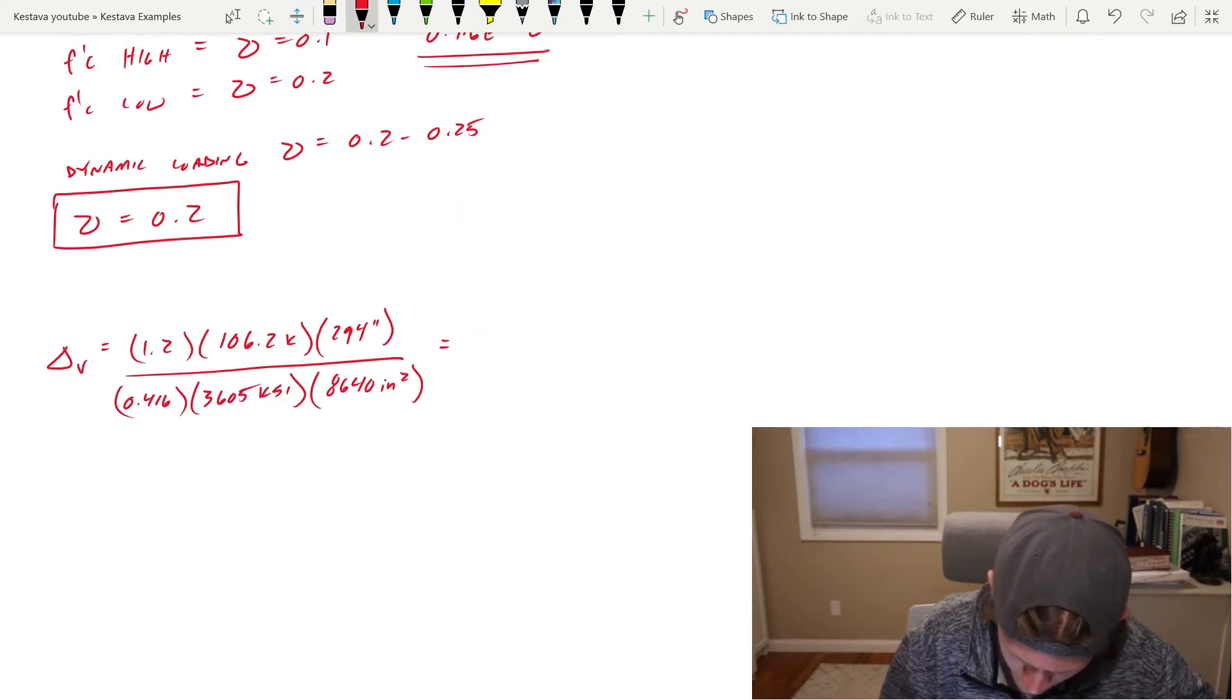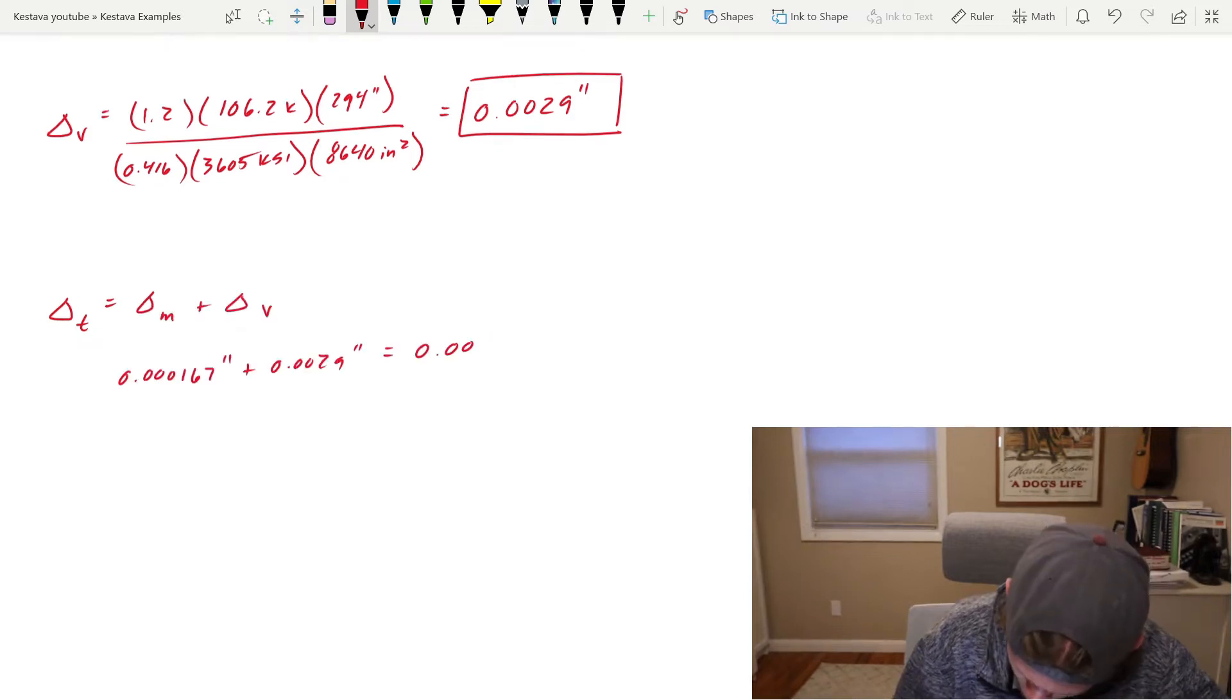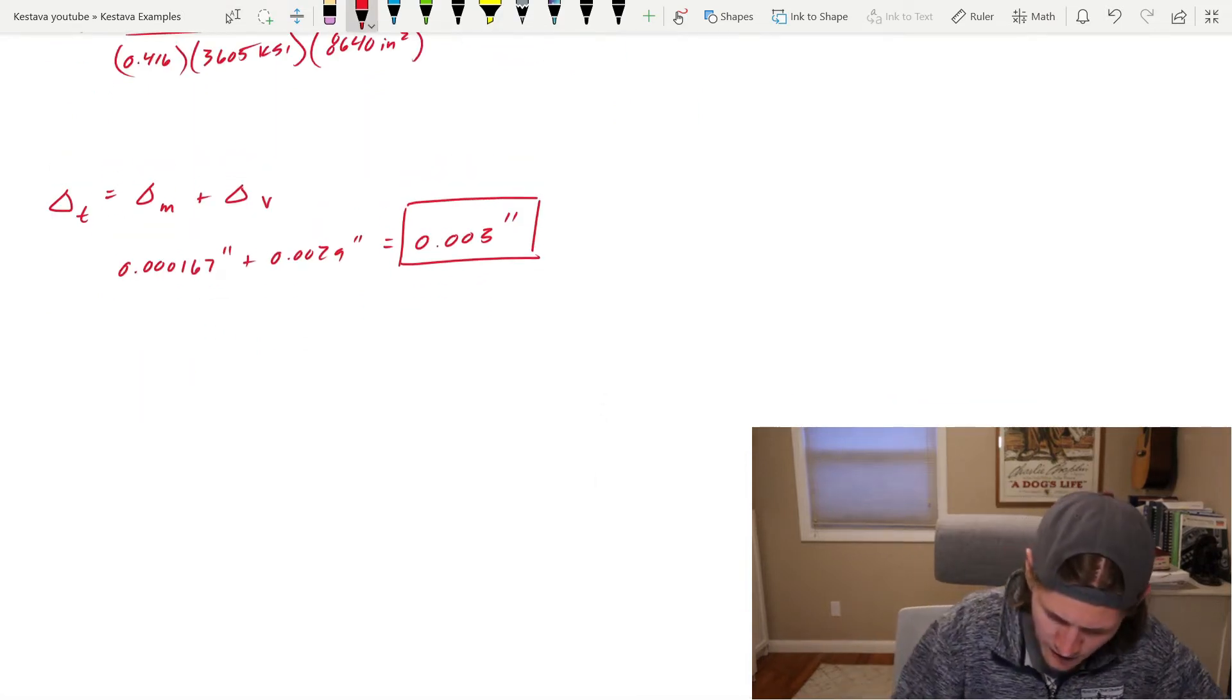And all of that gets us a total drift from shear equal to 0.0029 inches. That means our total drift is equal to 0.003 inches for total story drift.